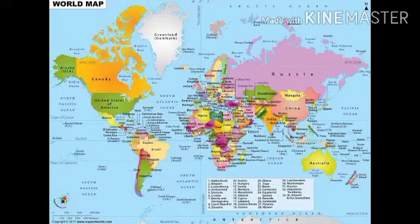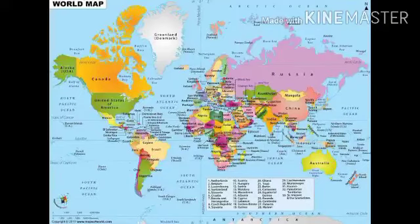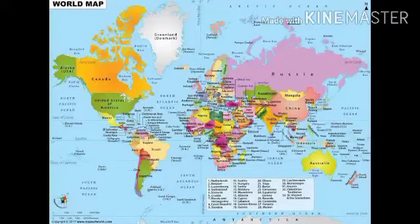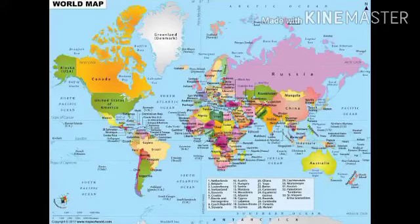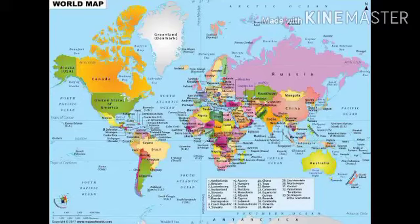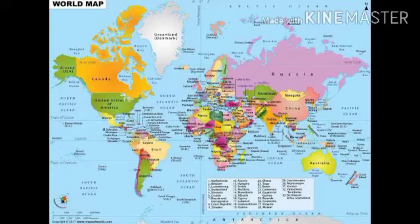The large landmass parts where we live are known as continents. There are seven major continents: Asia, Africa, Europe, North America, South America, Australia, and Antarctica. We are living in India, and our country is located in the continent Asia.